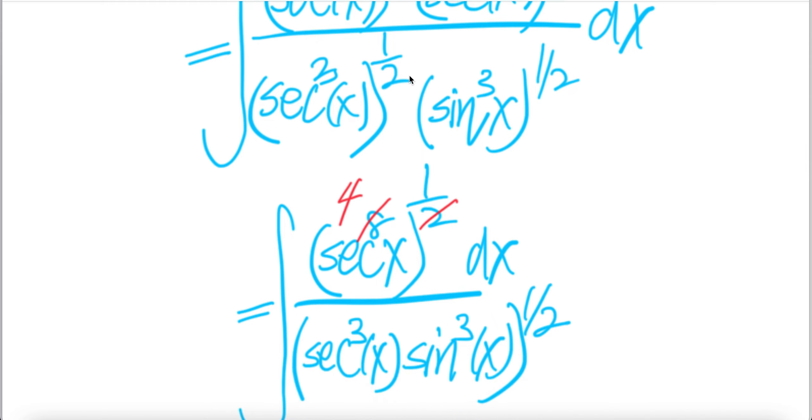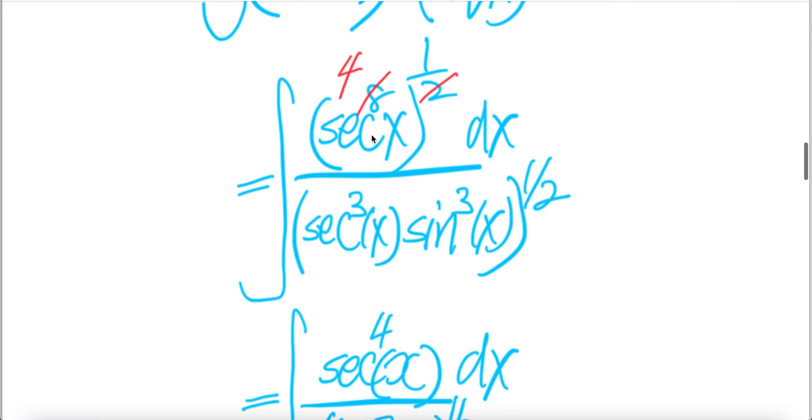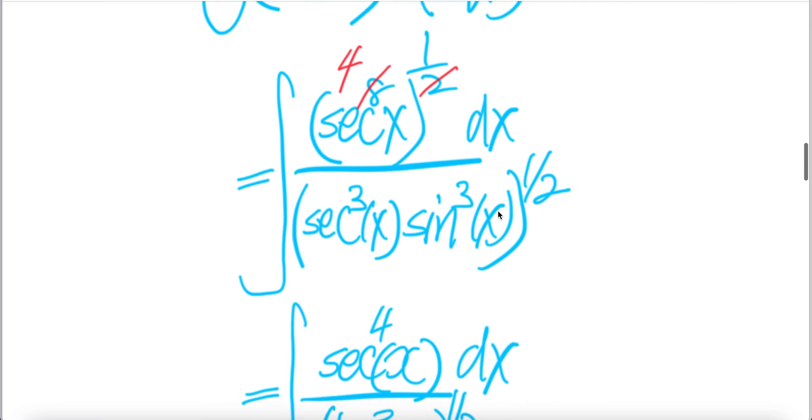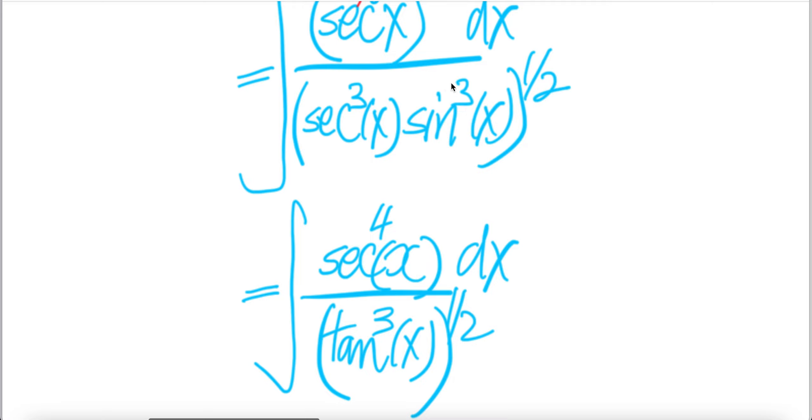Downstairs, we do the same. Put this in a common square root, so you get sec x cubed times sin x cubed to the power of half. Notice that from the property of exponentiation, you can cancel that, you get 4 here. So you get sec x to the power of 4 dx, then downstairs, sin cubed x times sec cubed x is tangent x cubed to the power of half.